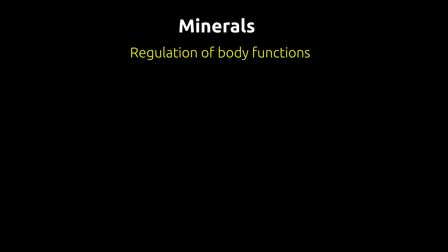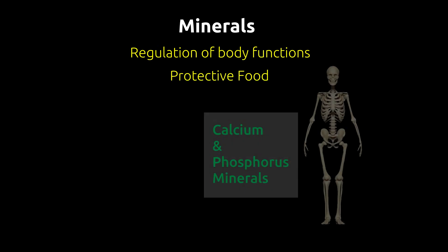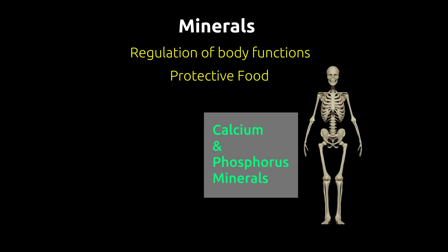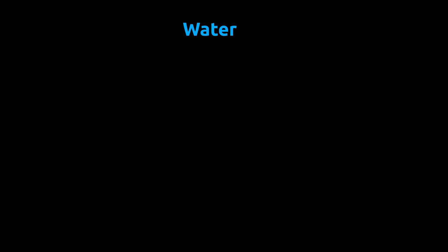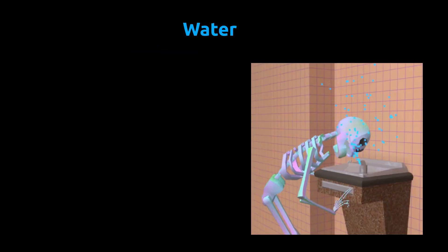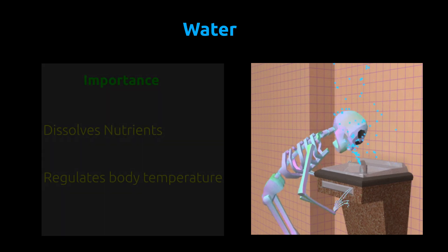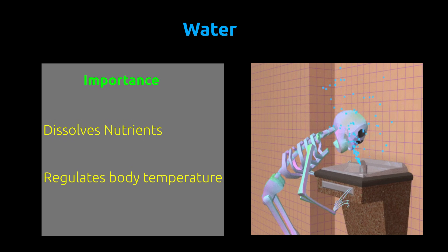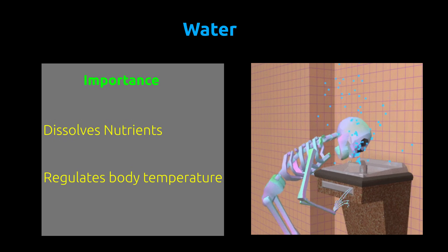Minerals are required for growth as well as for the regulation of normal body functions. They are also called protective foods. Our bones are made of calcium and phosphorus, which are types of minerals. Our body needs an adequate supply of water in order to maintain good health. Water has a variety of uses such as dissolving different nutrients and regulating body temperature, etc.